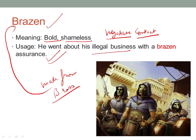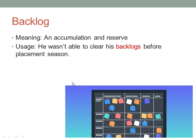The next word is 'backlog'. A backlog is an accumulation or a reserve. Generally in college, exams don't get reserved — they just accumulate because you've failed. For example: 'He wasn't able to clear his backlogs before the placement season.' That is a typical example of what backlogs are.